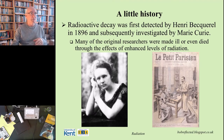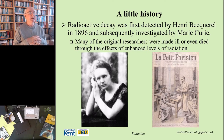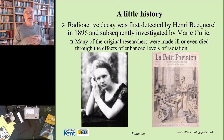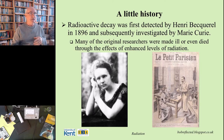Marie Curie did not die directly of radiation poisoning. She was a volunteer radiographer in the First World War for the French, spending those years using very early forms of X-ray apparatus behind the front lines, looking for broken bones and so on — saving, I don't know how many lives, it would have been a lot. But these early X-ray kits were nowhere near as safe as current ones. She picked up a lot of X-ray damage to her body in the process, and it was as a result of her exposure to X-rays that she was eventually brought to her death.